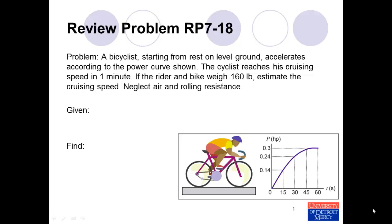Reading the problem, we try to identify what's given and what's unknown. We're told that the rider and the bike weigh 160 pounds, that the bike starts from rest, and that the cyclist reaches his cruising speed in one minute. We're also given this power curve, power versus time, and we want to estimate the cruising speed—the velocity at 60 seconds, at one minute.